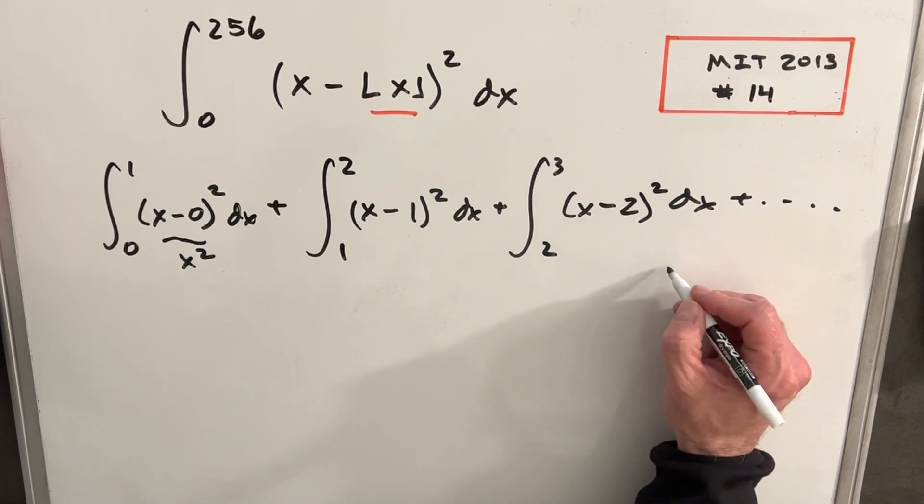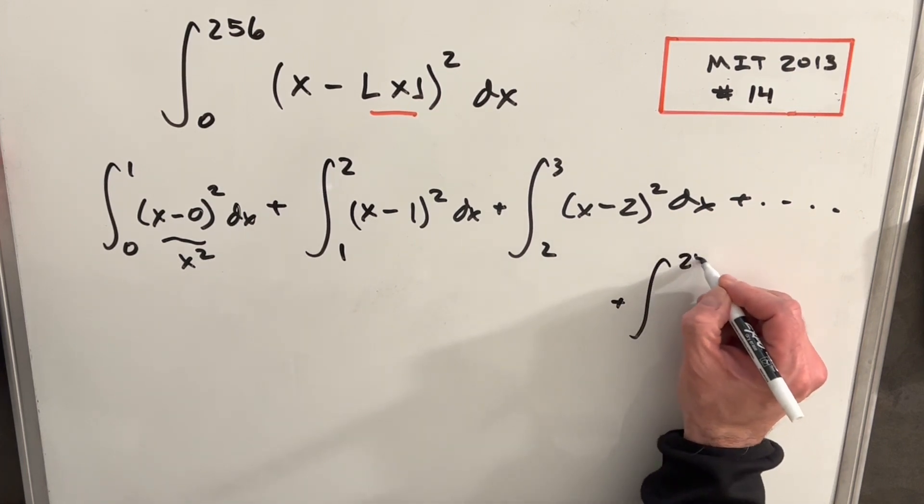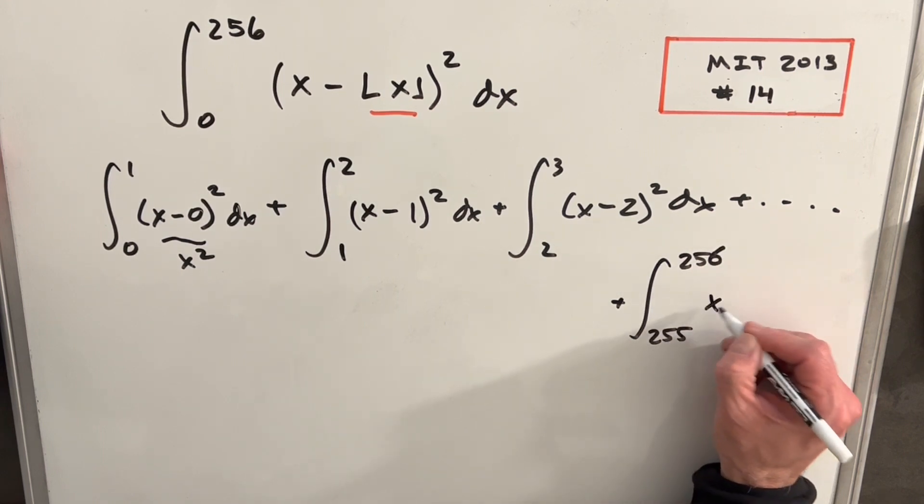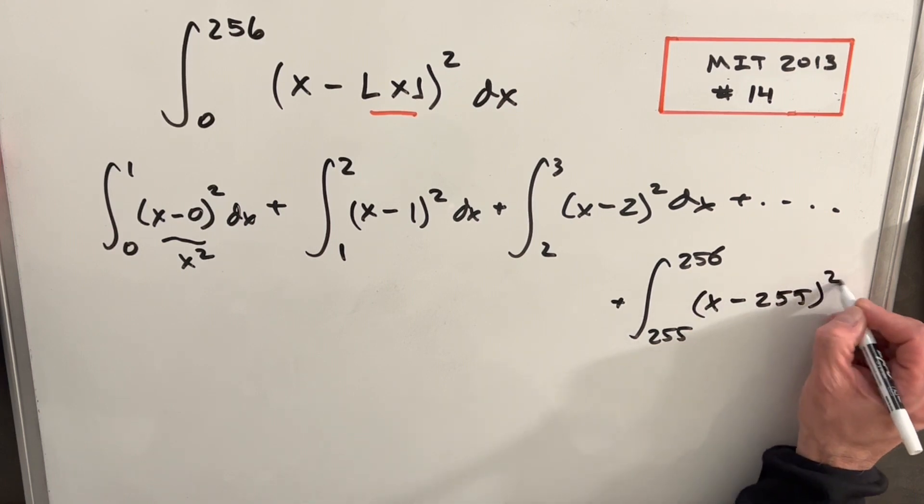We go on and on with this. I think we could just write our last value here. So we could have from 255 to 256, it's going to be x minus 255 squared dx.